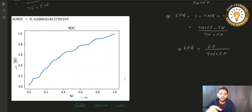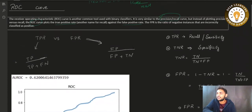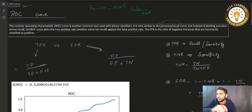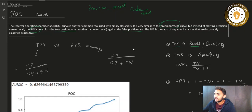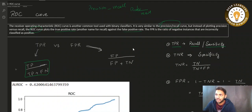So we will discuss what is true positive rate and what is false positive rate. True positive rate is the same as recall and sometimes we also call it sensitivity. It has the formula: true positive divided by true positive plus false negative. You are already familiar with that.